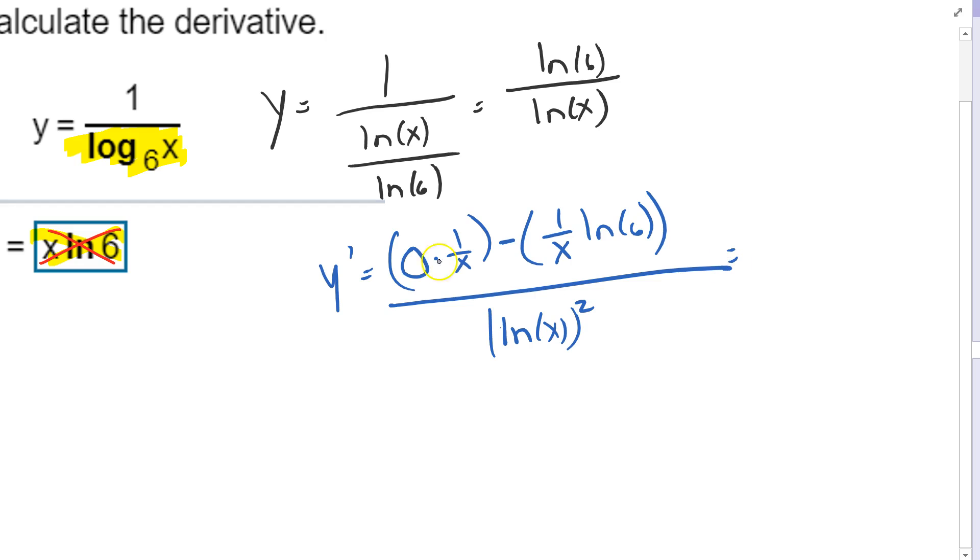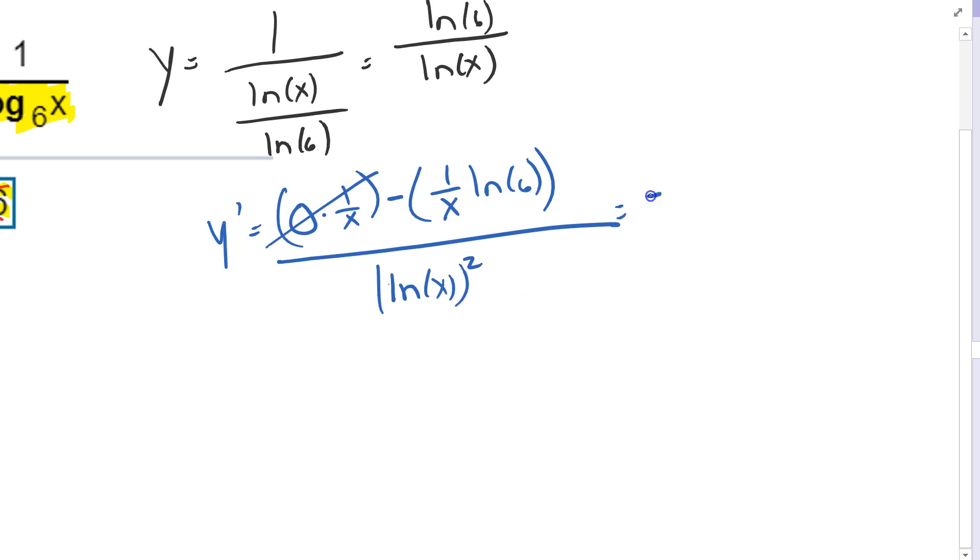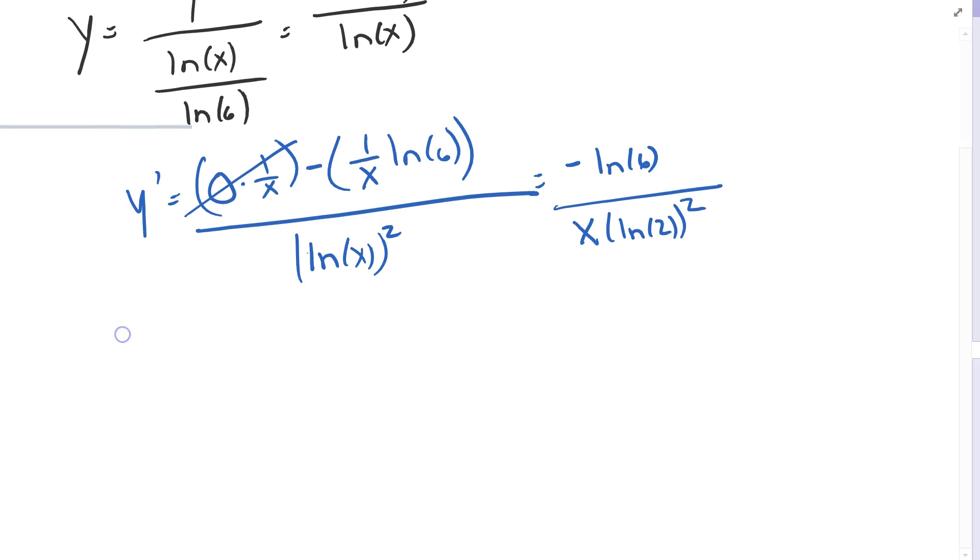And then cleaning it up, I would get minus ln of 6 times 1 over x, and I could actually write that in the denominator here, times ln of x squared. I could also write it as just minus 1 over x, ln of 6 over ln, that should be ln of x, not 2, ln of x quantity squared.